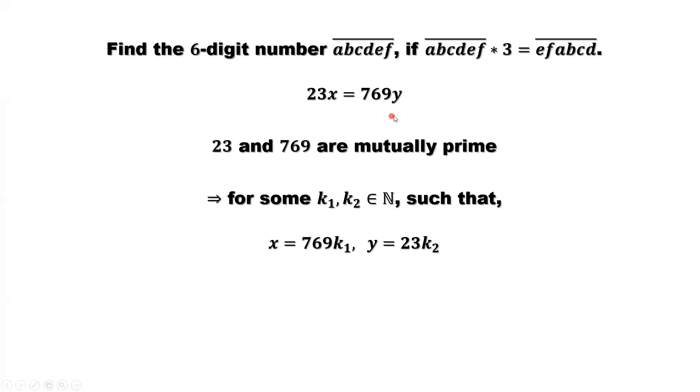Similarly, look at the right-hand side. We have Y here. Left-hand side, we have 23. 23 and 769 have no common factors. So, it implies Y must have 23 as a factor. Y equals 23 times some constant, K2. Both K1 and K2 are positive integers.